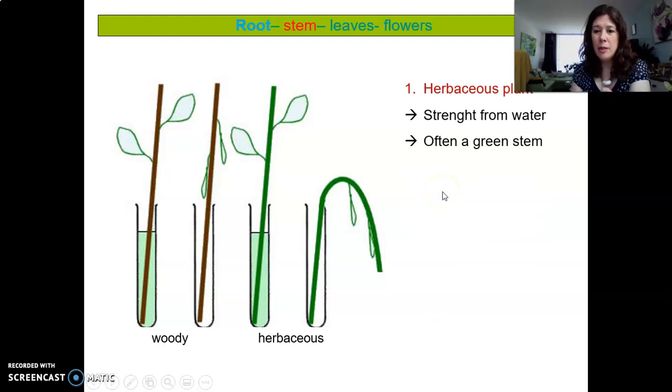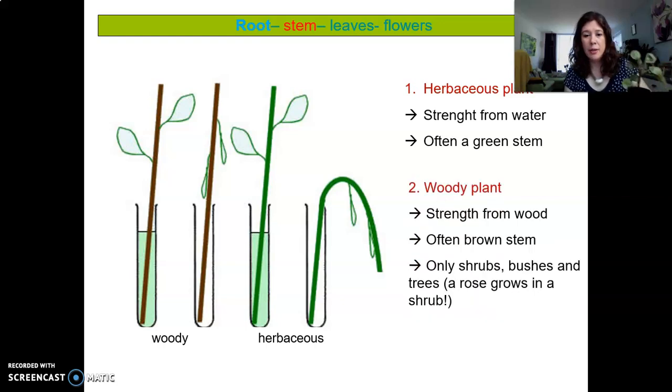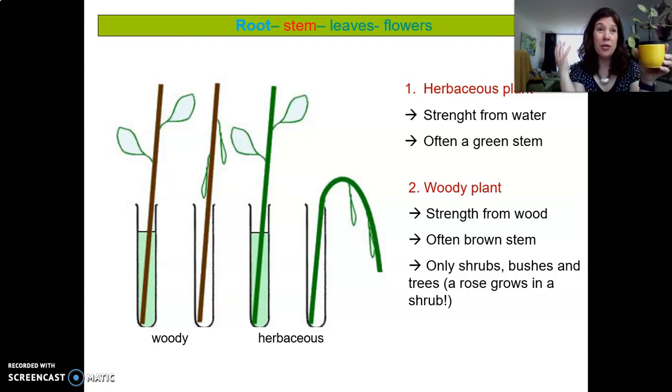Okay, so in summary, a herbaceous plant gets its strength from water and it's often a green stem. And then the woody plant gets its strength from wood, and it's always a brown stem. Well, very often, like trees all have woody stems. And of course shrubs, bushes, and roses, they're all the ones with woody stems.